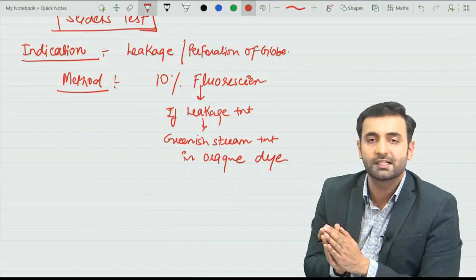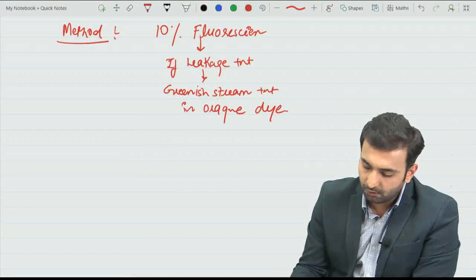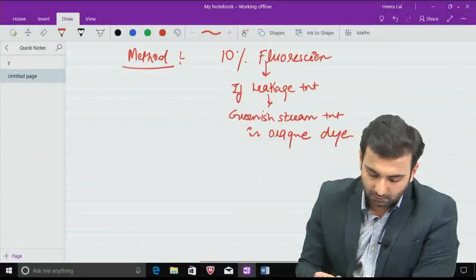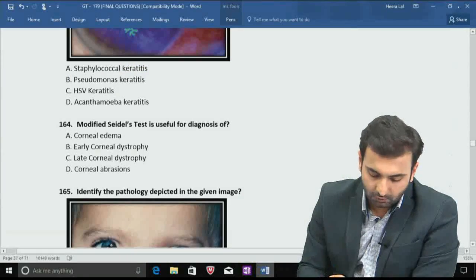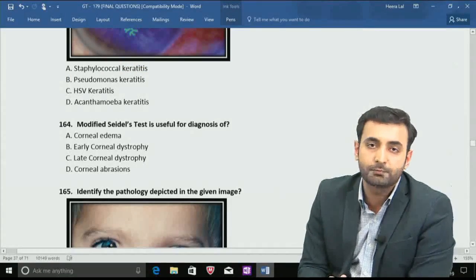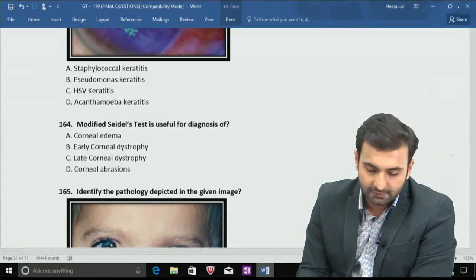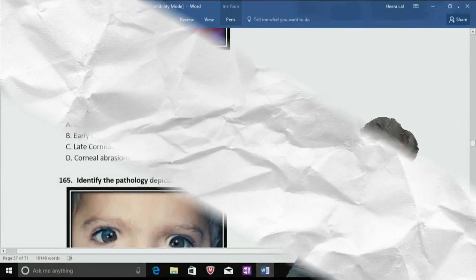We use a blue filter on CEDL. So this is about the CEDL test. The best option we have is corneal abrasions which may have occurred due to blunt trauma. Answer is D.